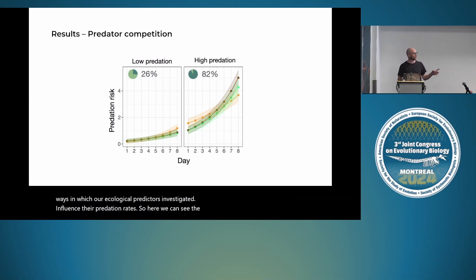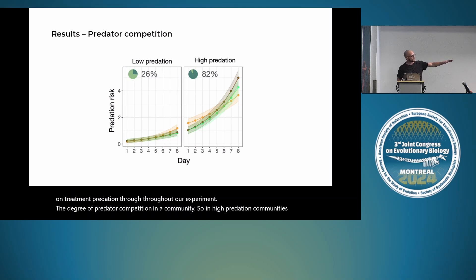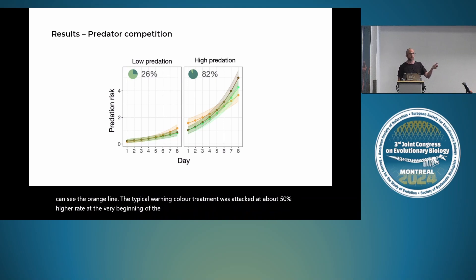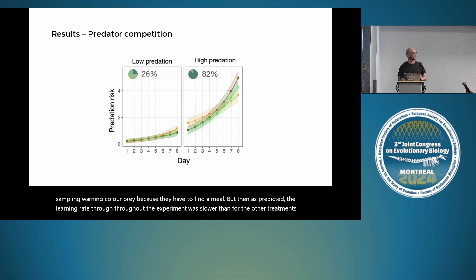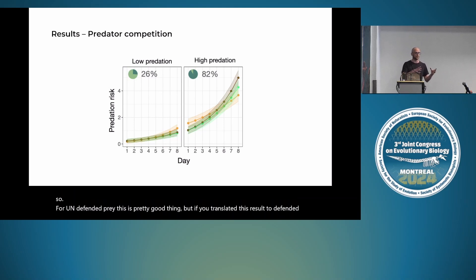The biggest effect on predation was the degree of predator competition in the community. In high-predation communities, the typical warning color treatment was attacked at about 50% higher rate at the start of the experiment—as expected if predators sample warning-colored prey because they must find a meal. But as predicted, the learning rate throughout the experiment was slower than for other treatments. Translated to defended aposematic prey, this would be bad: novel prey would be picked off early and predators would be slow to learn they're defended.